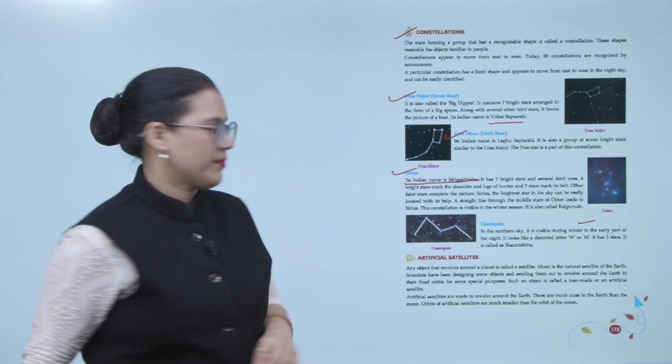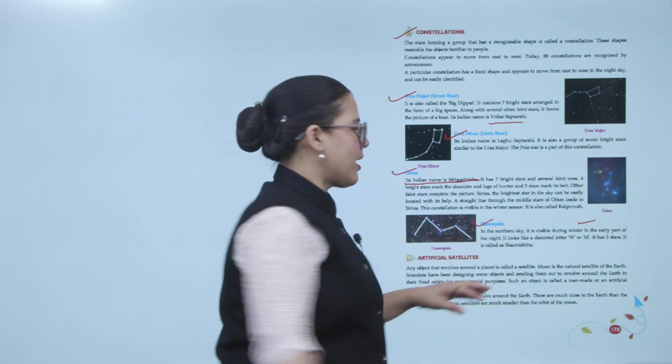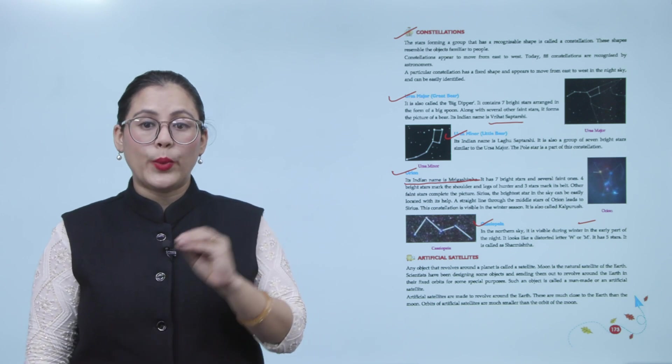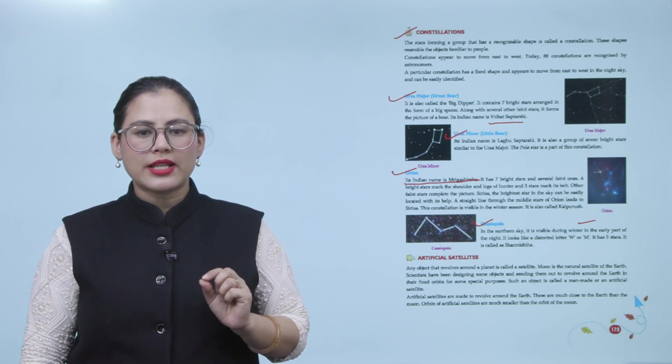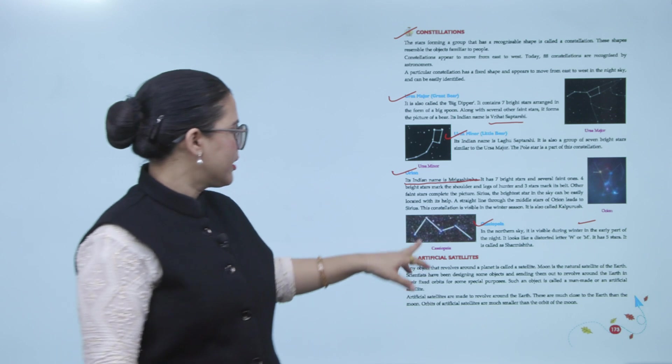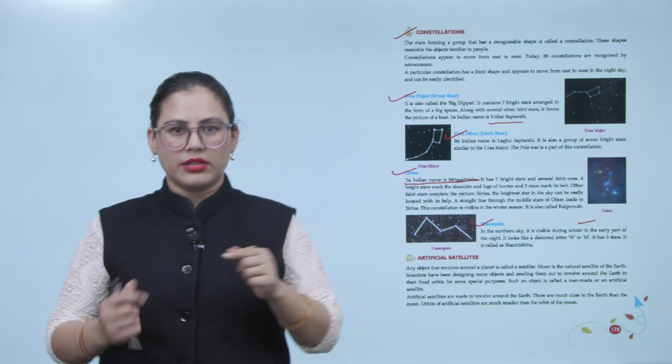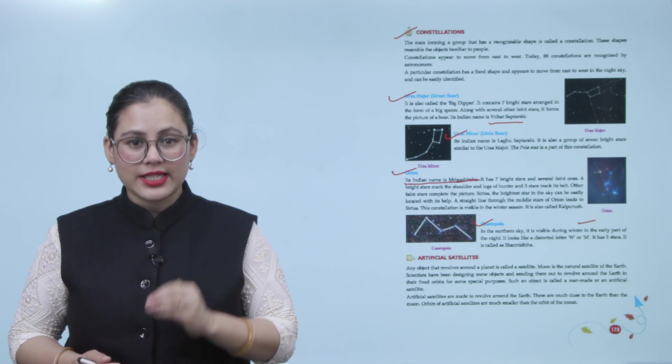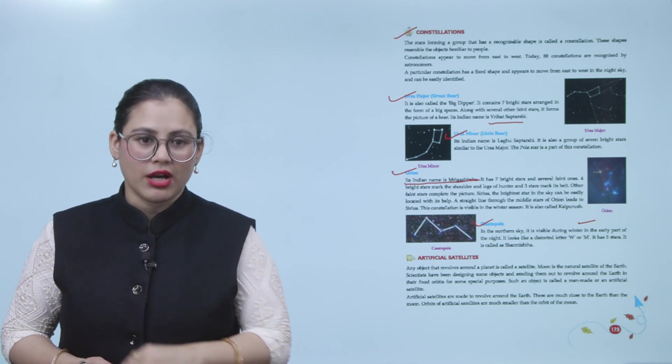Next is Cassiopeia. In the northern sky, it is visible during winter in the early part of the night. It looks like a distorted letter W or M. It has five stars. It is also called Sharmishtha.